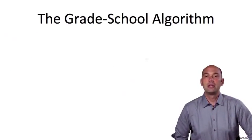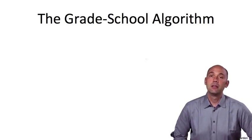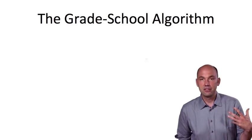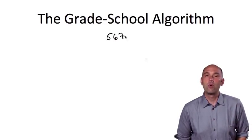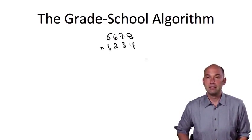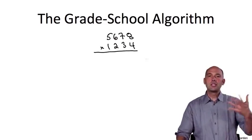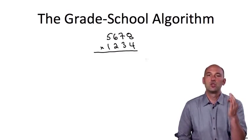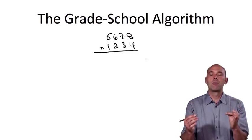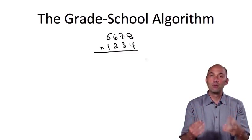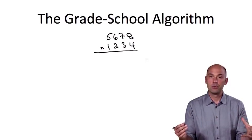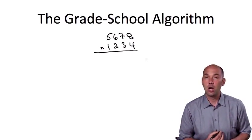Here is the integer multiplication algorithm that you learned back in third grade, illustrated on a concrete example. Let's take the numbers 1234 and 5678. As we go through this algorithm, let me remind you that our focus should be on the number of basic operations this algorithm performs as a function of the length of the input numbers, which in this example is four digits long.